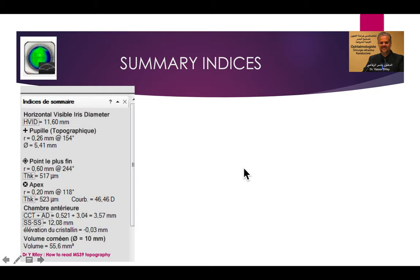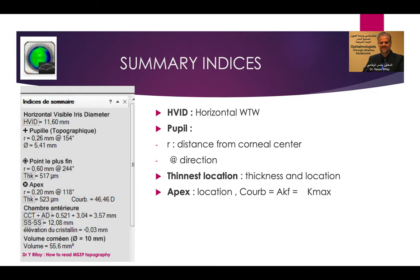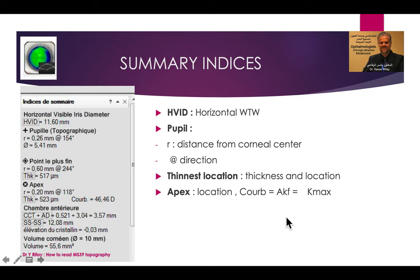In the numeric data, we have a summary — this is the most important section when starting to read MS-39 topography. We have the HVID, which is the horizontal white-to-white. We have the pupil and its distance from the corneal center. We have the thinnest location — the thinnest point of the cornea — with its thickness and location. We have the apex of the cornea, its location, and its curvature called AKF (Apex Keratoscopy Front), which is what we know as Kmax. The Kmax in MS-39 is called AKF.